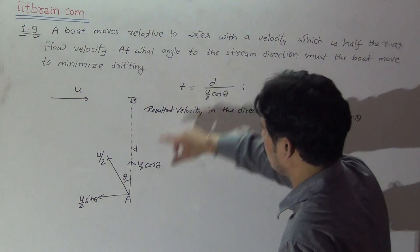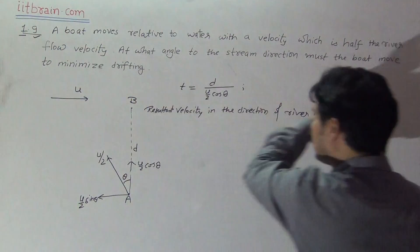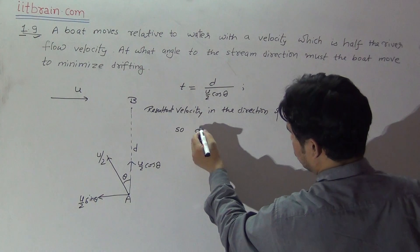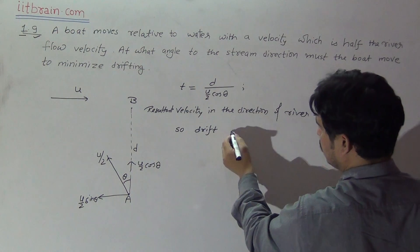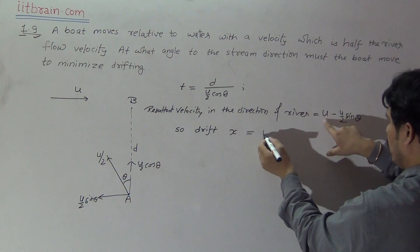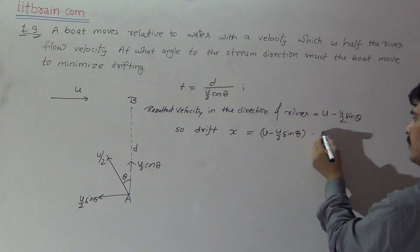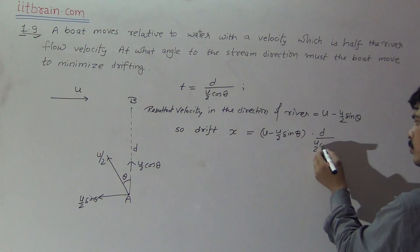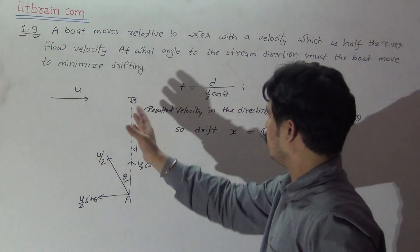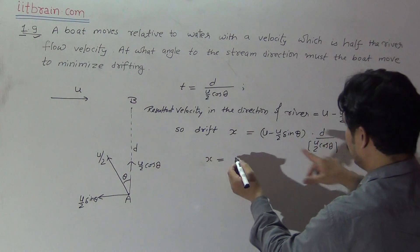The time required to cross the river is t, and u minus u/2 sinθ is the resultant velocity in the direction of the river. So drift x equals the velocity in the direction of flow multiplied by the time taken. Time taken is d divided by (u/2 cosθ), so x equals (u minus u/2 sinθ) times d / (u/2 cosθ).